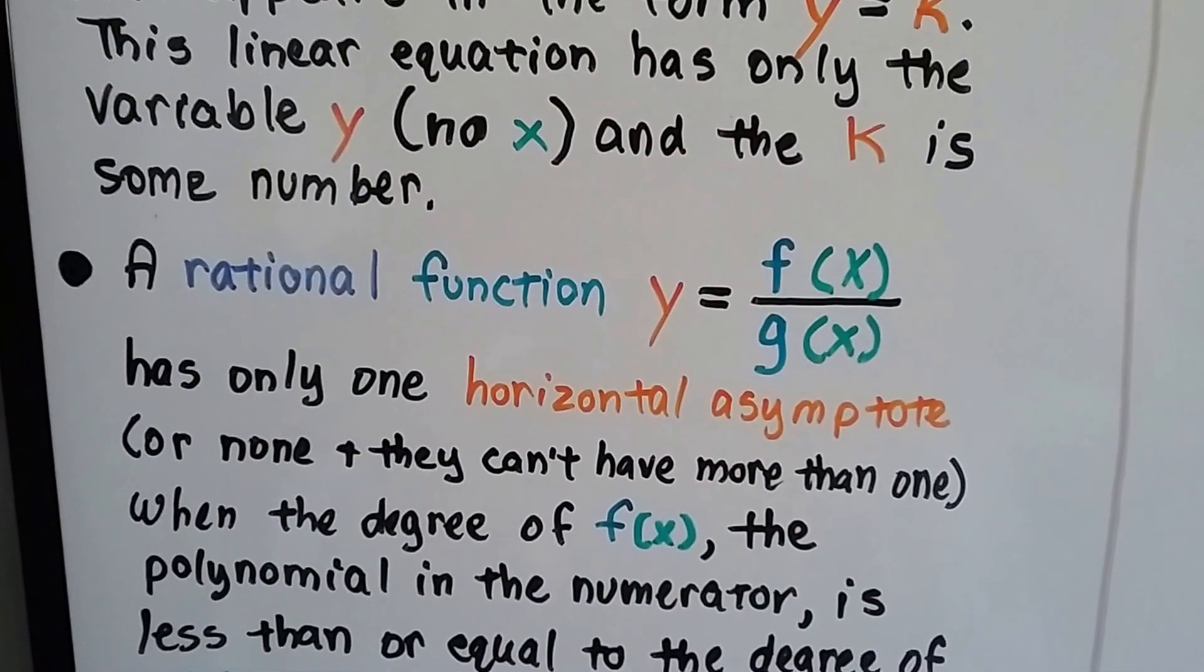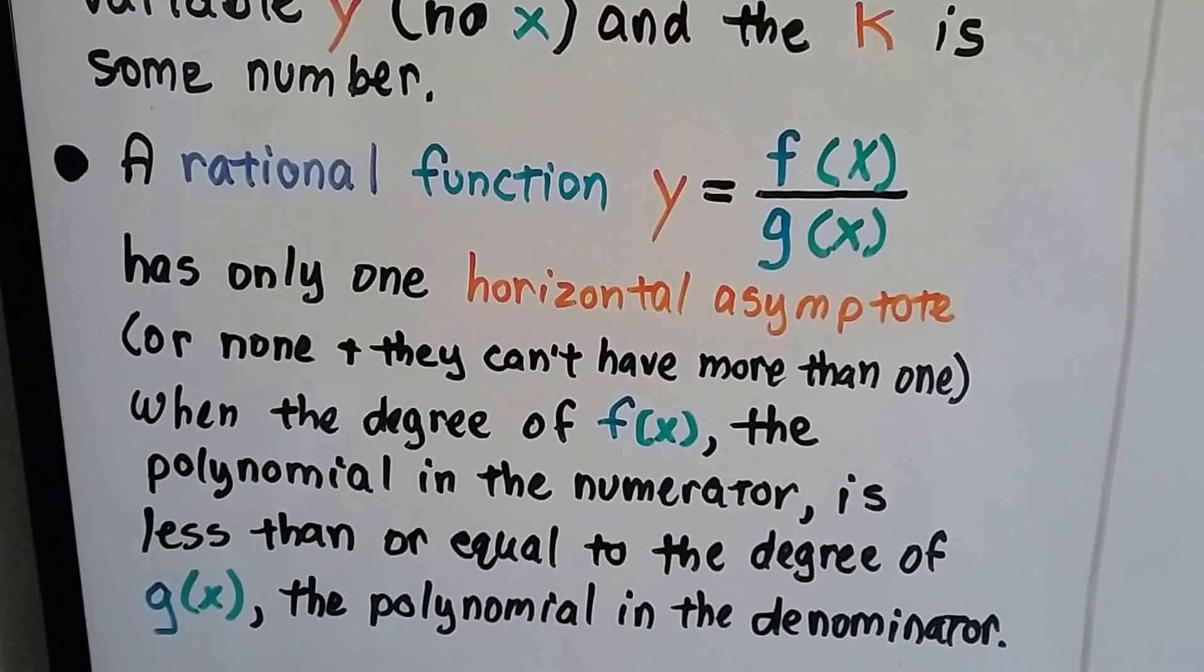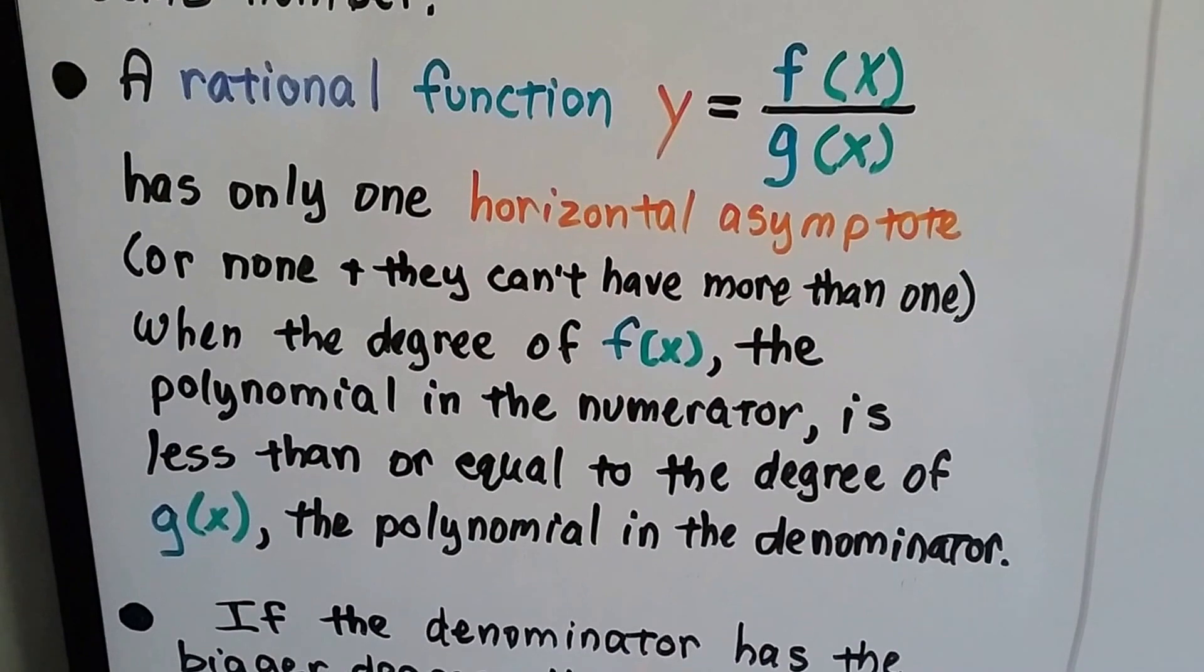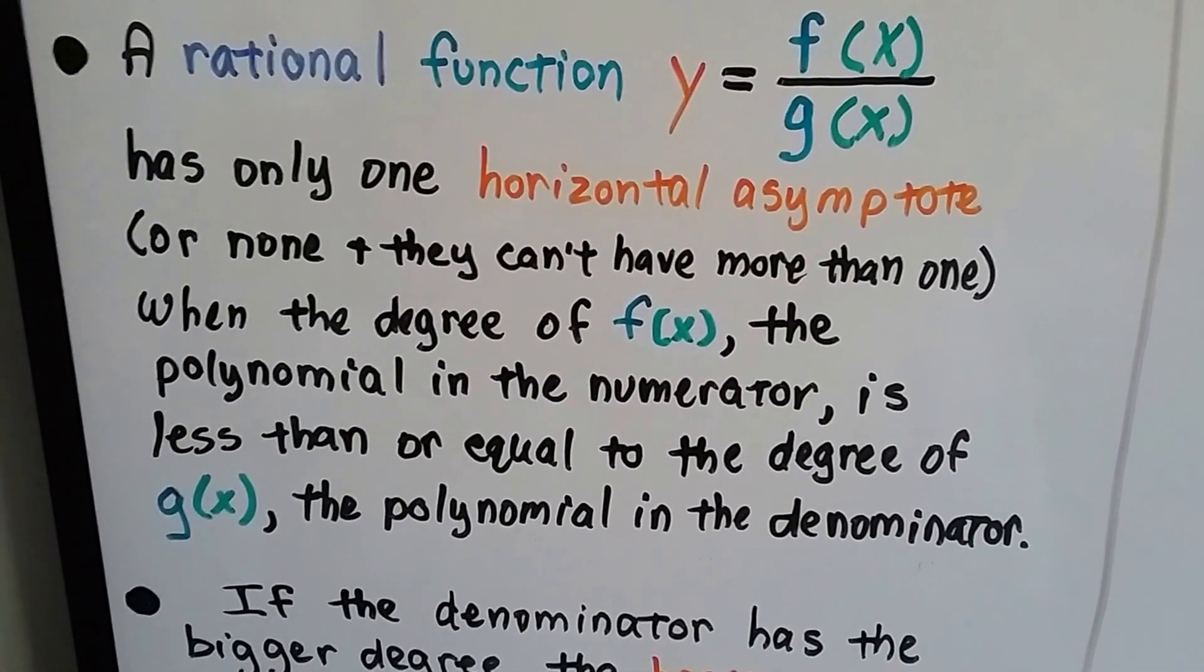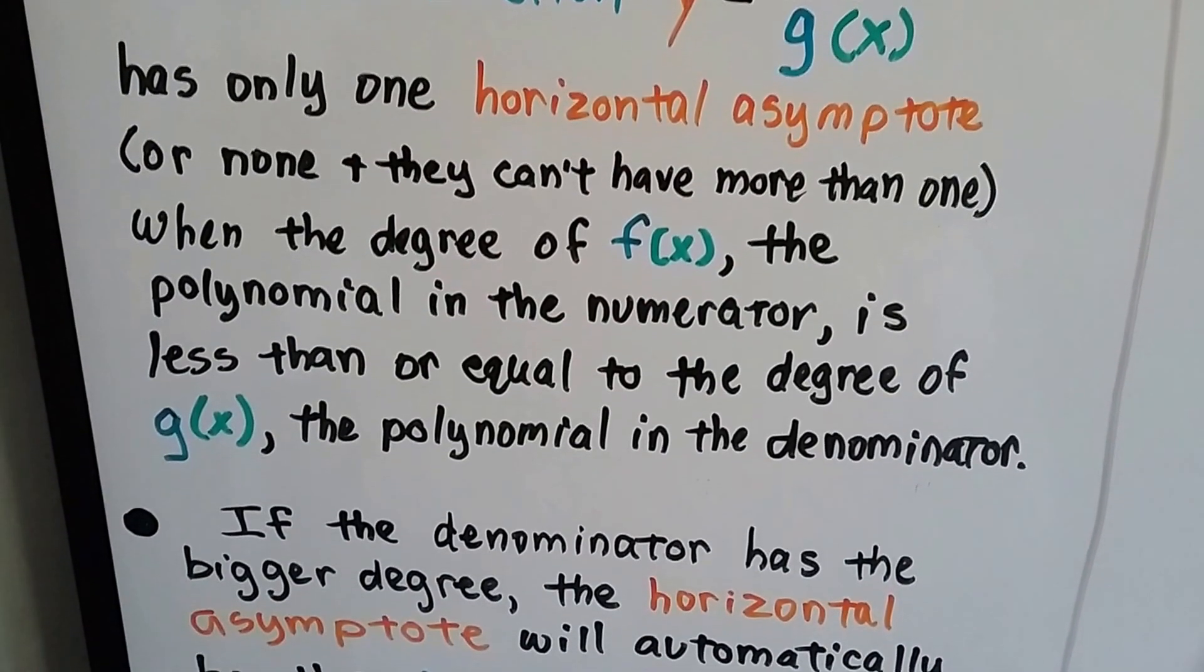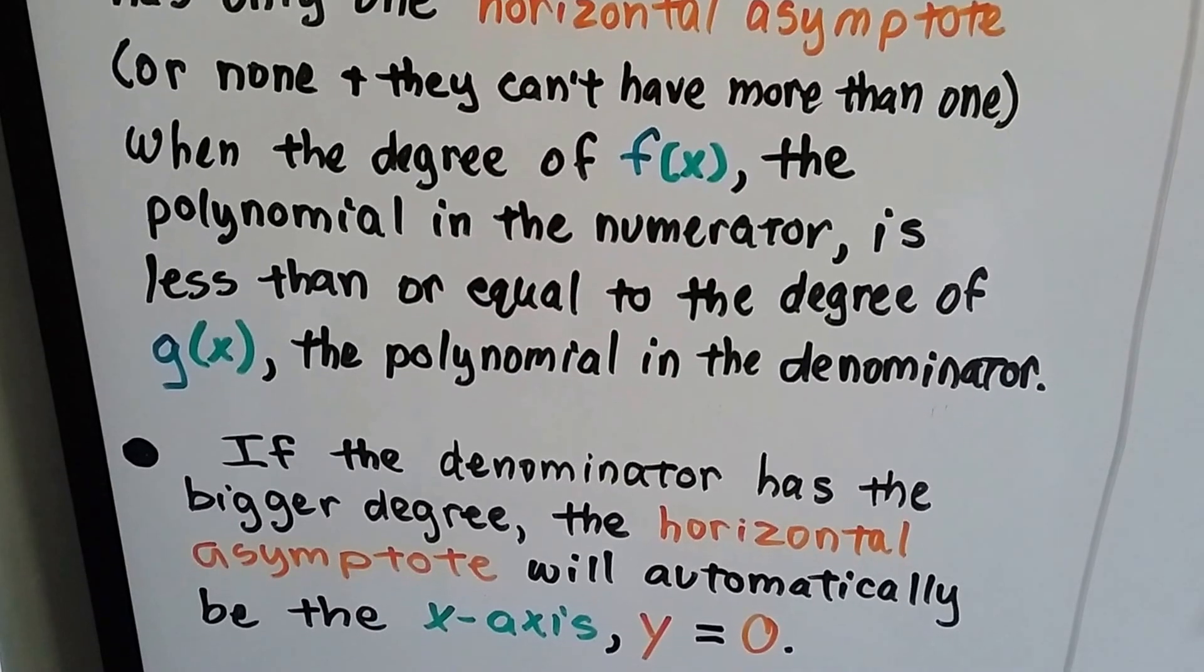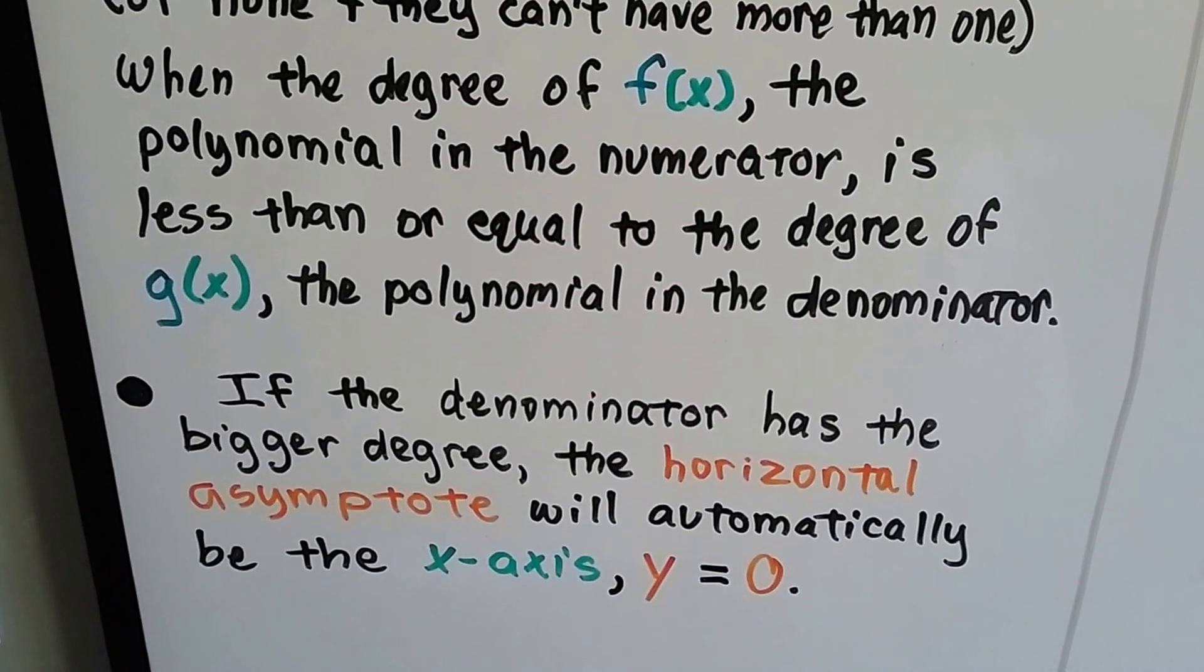A rational function, y equals the quotient of f(x) and g(x), has only one horizontal asymptote, or none, but they can't have more than one, when the degree of f(x), the polynomial in the numerator, is less than or equal to the degree of g(x), the polynomial in the denominator.